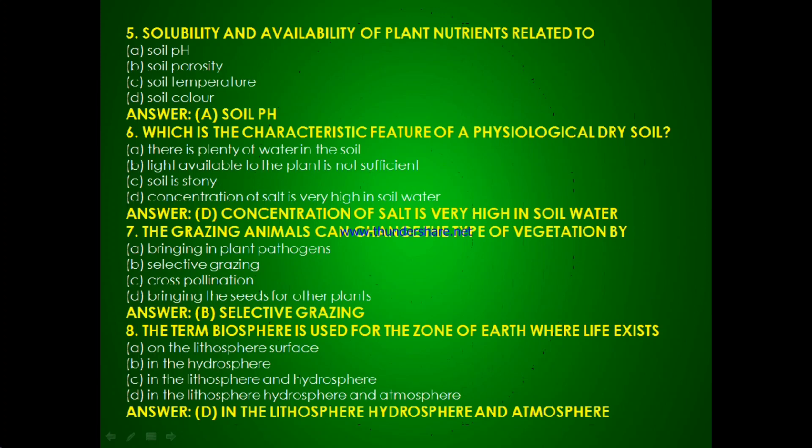Question 6: Which is the characteristic feature of a physiological dry soil — there is plenty of water in the soil, light available to the plant is not sufficient, soil is stony, or concentration of salt is very high in soil water? The answer is D — concentration of salt is very high in soil water.